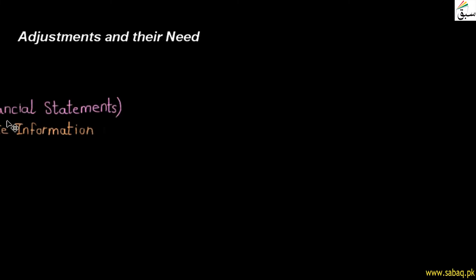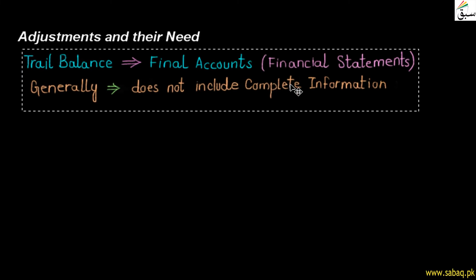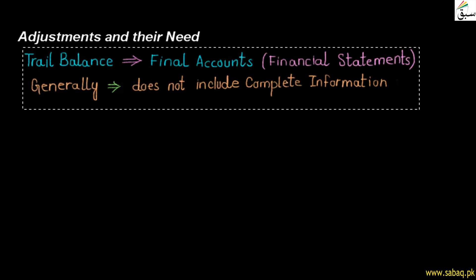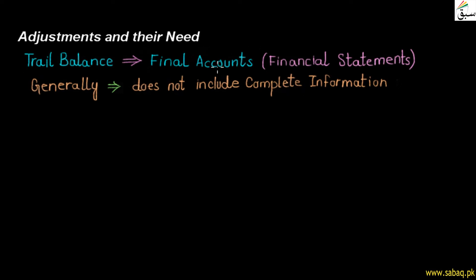Today's topic is adjustments and their needs. We will see what adjustments are and what the needs of these adjustments are. We have done a whole chapter on final accounts — the financial statements of the company. The final accounts are made by the company, which tell the profit and loss of the business.